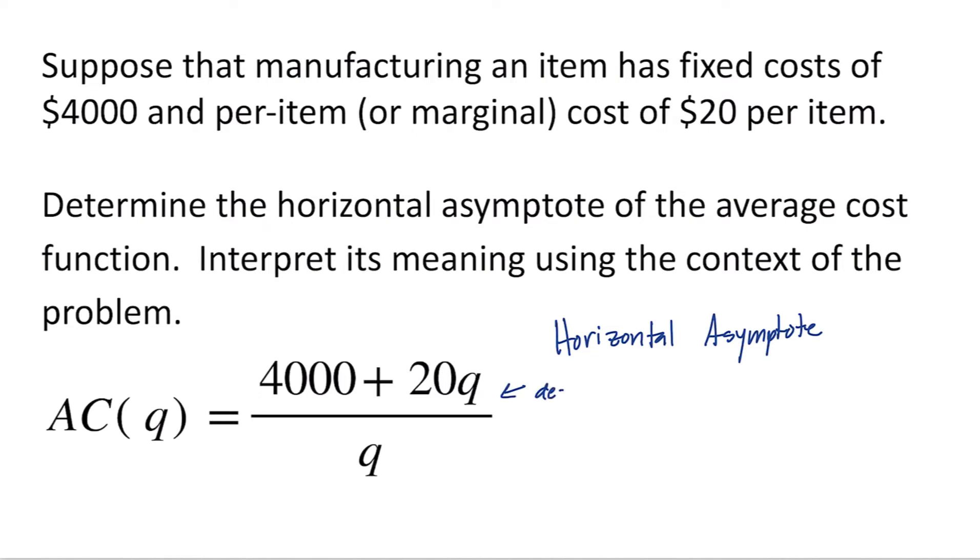So since the degree of the numerator is 1 and the degree of the denominator is also 1, to find the horizontal asymptote, we're going to look at the ratio of the leading coefficients. The leading coefficient for the numerator is 20, the leading coefficient for the denominator is 1, so we're going to have a horizontal asymptote at 20 over 1, or just 20.